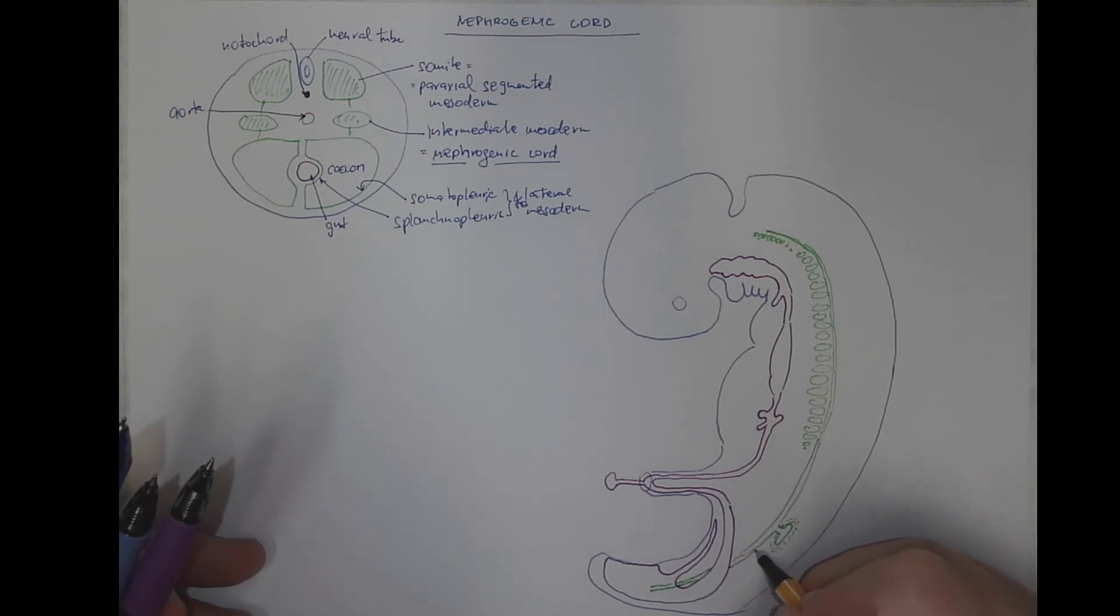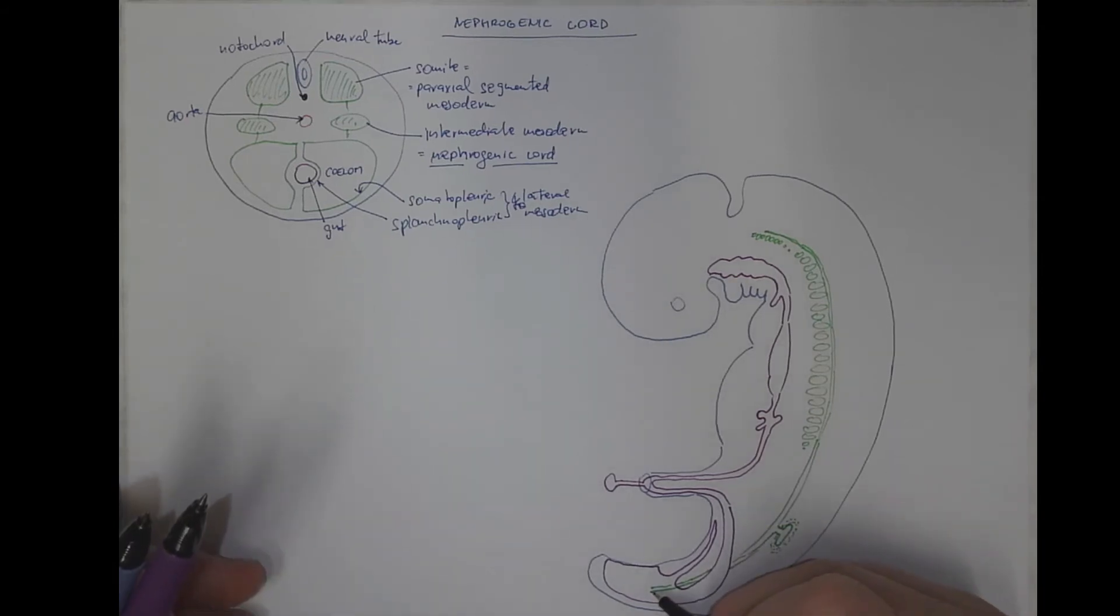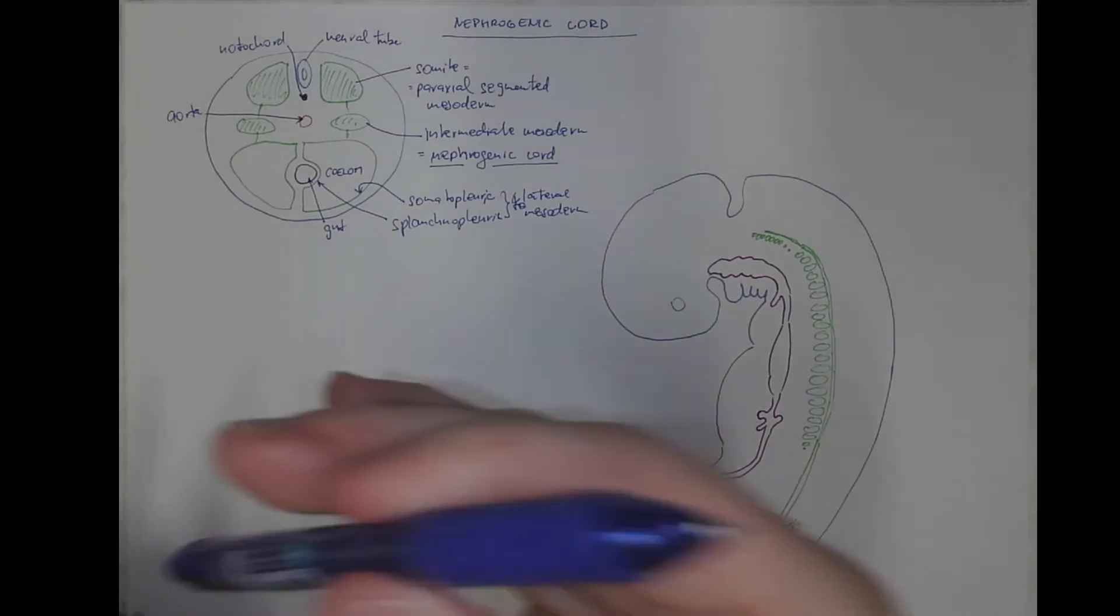So we understand that the cloaca is a common segment of the hindgut and the urinary and genital system. So let's label the structures.